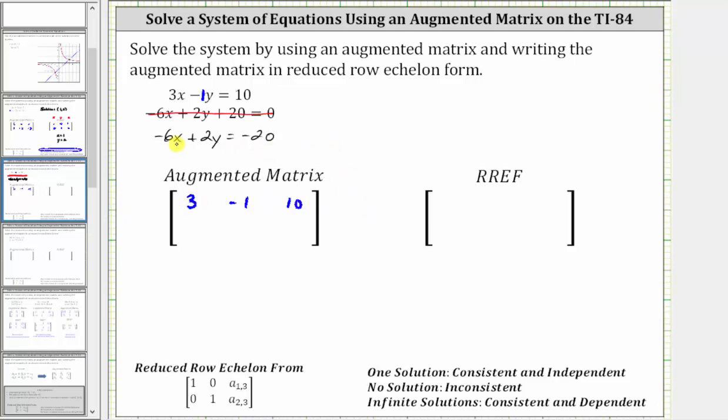Now looking at the second equation, the coefficient of x is negative 6, the coefficient of y is 2, and the constant is negative 20, giving us a second row of negative 6, 2, negative 20.